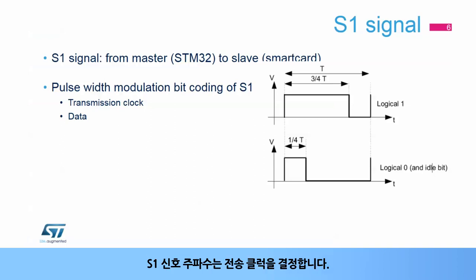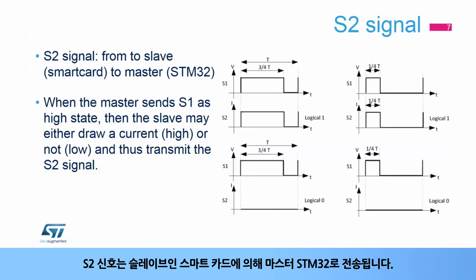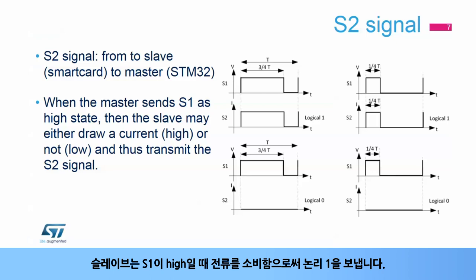The S1 signal frequency determines the transmission clock. The S2 signal is transmitted by the slave (the smart card) to the master (the STM32). The slave draws a current while S1 is high to send a logical 1. If the slave does not draw any current while S1 is high, it is a logical 0.